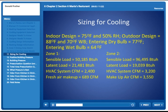Sensible equals 50,185. Latent, 21,481. HVAC system CFM is 2,400 CFM. Fresh air makeup is 689 CFM.